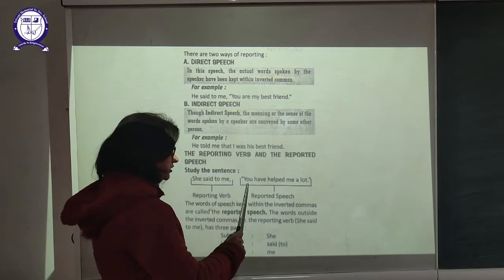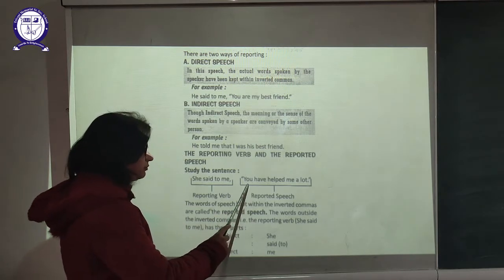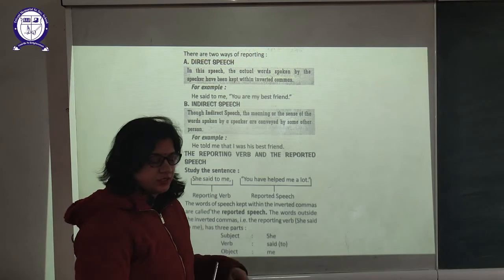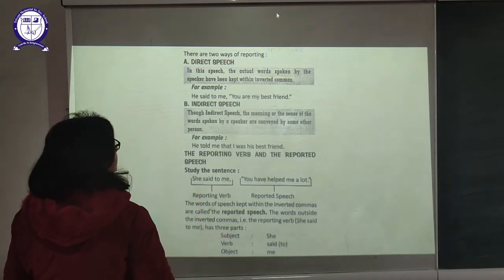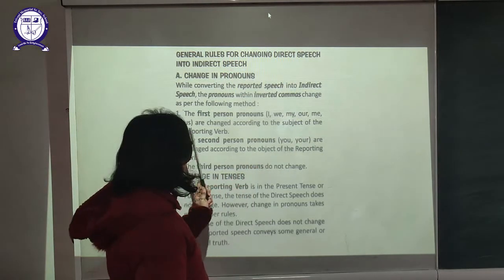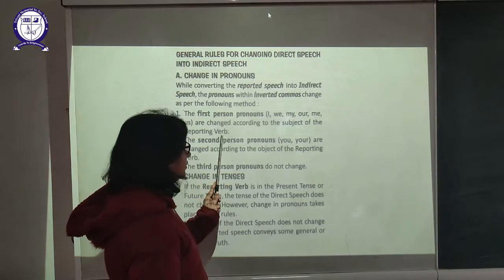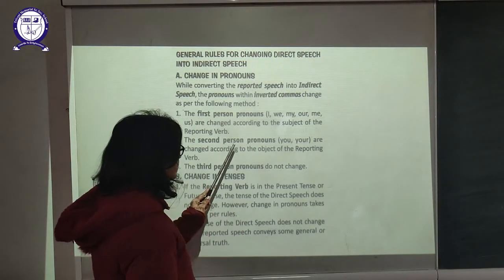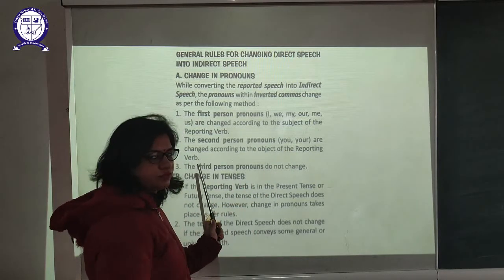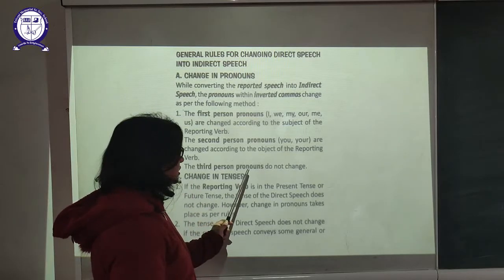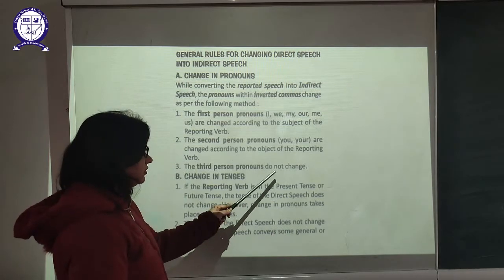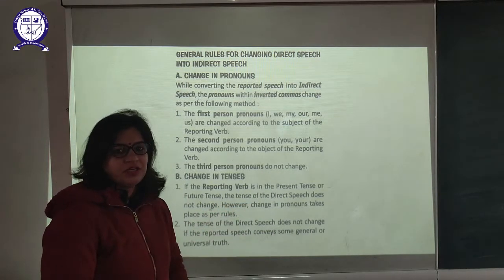Next comes the third person pronoun. If the subject of the reported speech is the third person pronoun, then it will not be changed — it will remain the same. The first person pronouns I, we, me, our, us are changed according to the subject of the reporting verb. Third person pronouns — he, she, it, they — do not change; they remain the same in the reported speech.